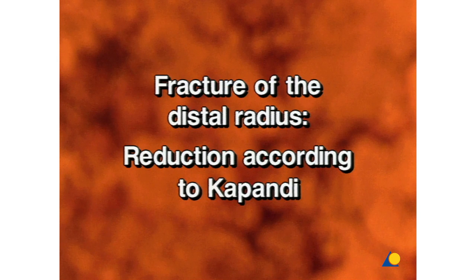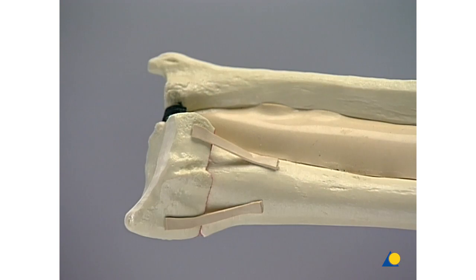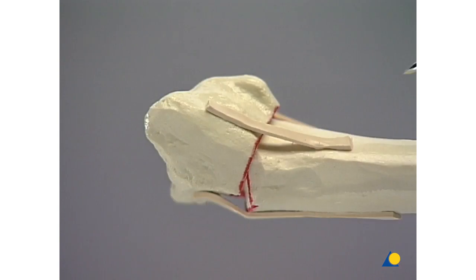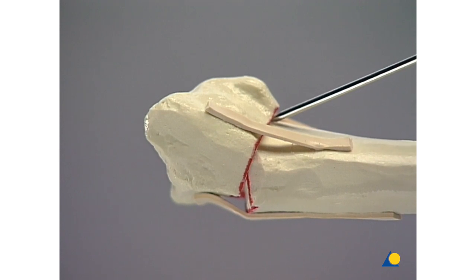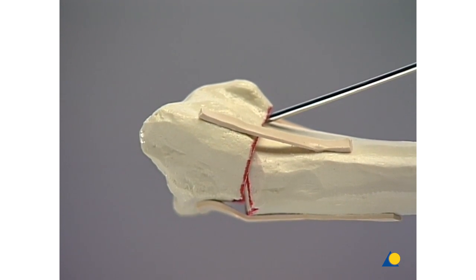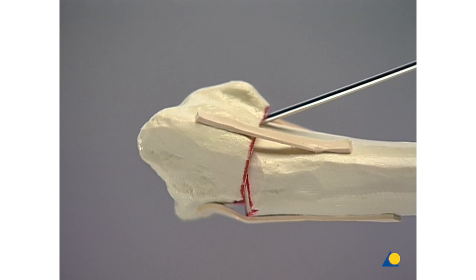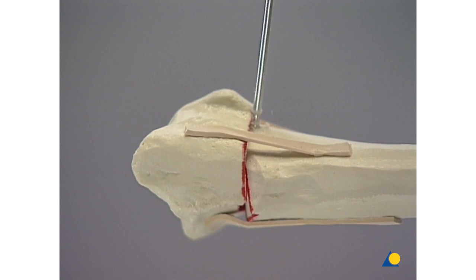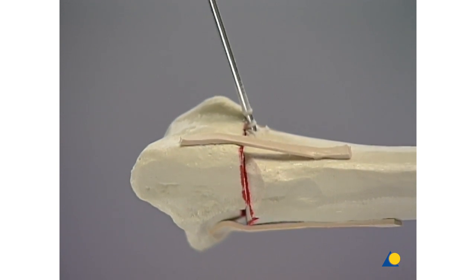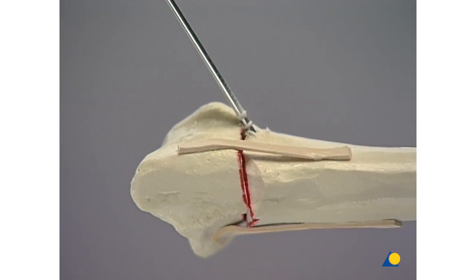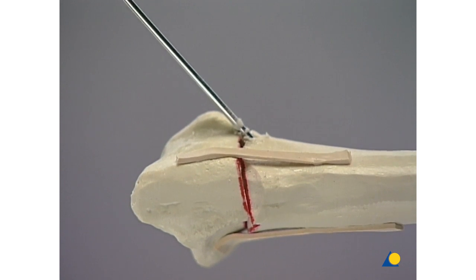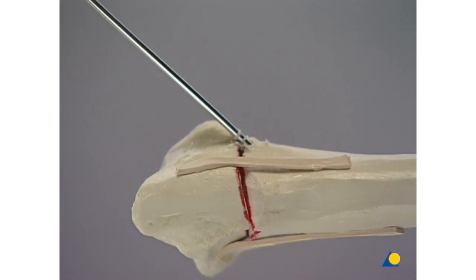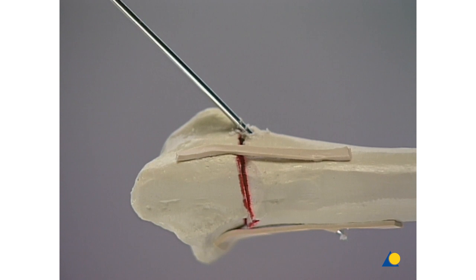Fracture of the distal radius: reduction according to Kapandji. A K-wire is inserted under image intensifier control into the fracture site on the dorsal side of the radius. The fracture is reduced by simultaneously drilling and tilting the wire in the distal direction. The final fixation is achieved by perforating the far cortex with the same wire.